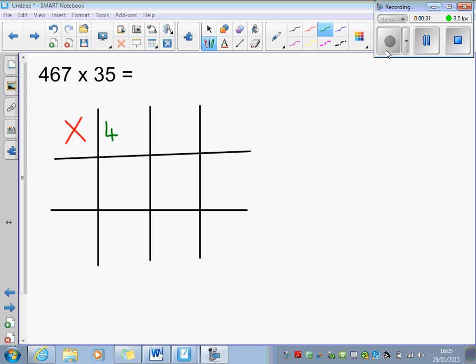the 4 would stand for 400, the 6 would stand for 60 because it's in the tens column, and the 7 would be just 7, 7 units.